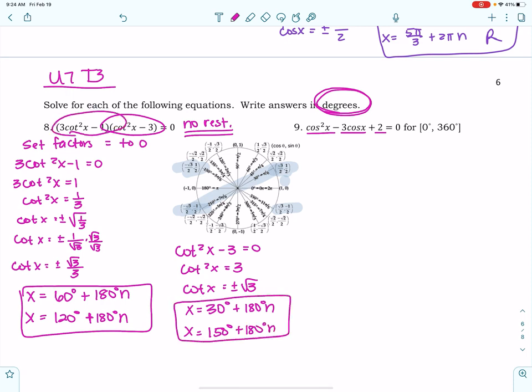Okay, so both of those factors, right? Set the factors equal to 0. This one and this one. So those are your total solutions. Sorry, babies. Okay, so for number 9, now I can go ahead and address that. For number 9, we are going to have to factor first. So we're going to treat this just as if we had x squared minus 3x plus 2. So I am going to factor this first.